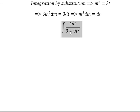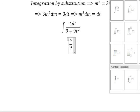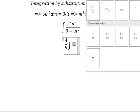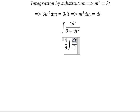Next, we put number 4 and number 9 outside. You get 4 over 9 multiply the integral of dt over 1 plus t square.